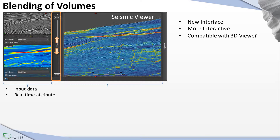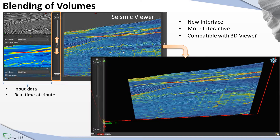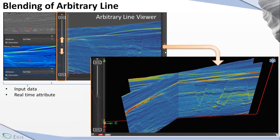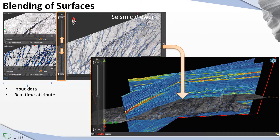This interface is a 2D interface, but if you want, we can put this 2D interface into the 3D viewer, so we have high interactivity between all the viewers. We are playing with the volumes, but we can also create a crossplot with arbitrary lines and surfaces — by surfaces I mean horizons and horizon stacks.